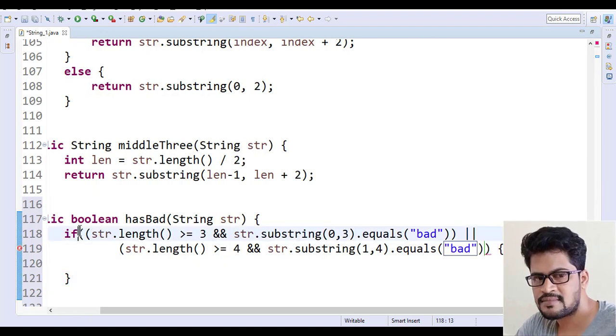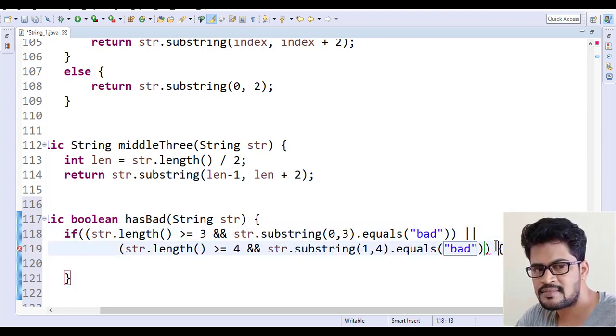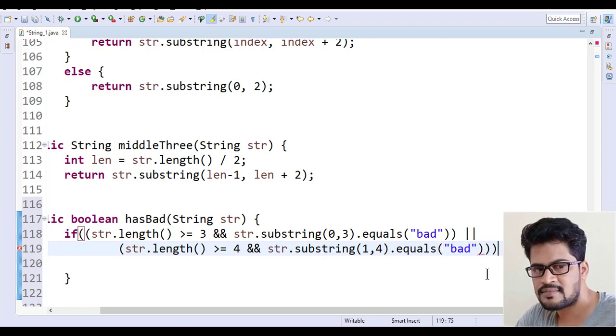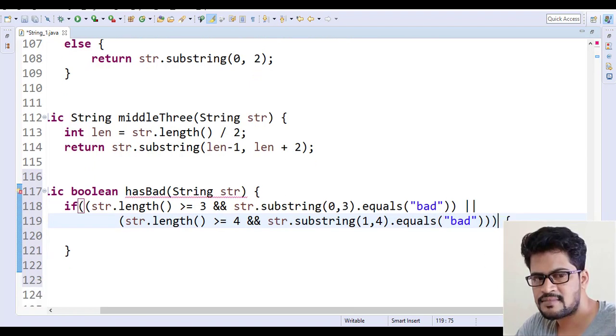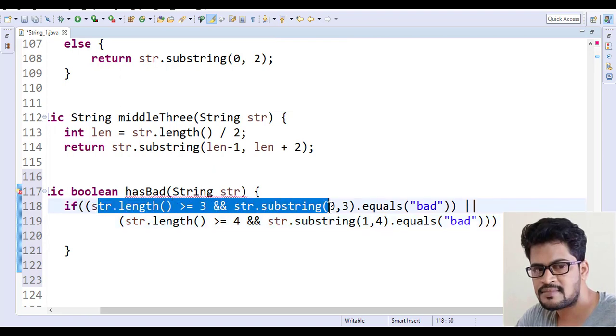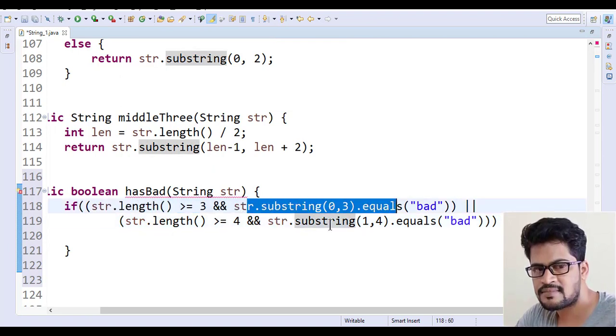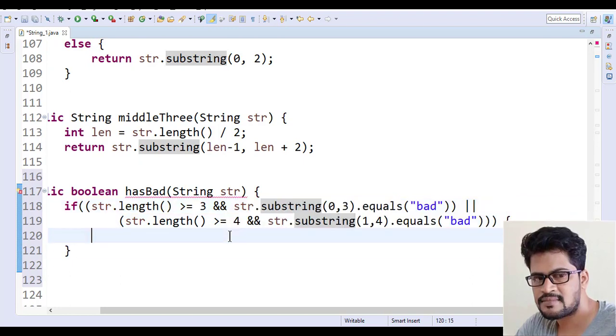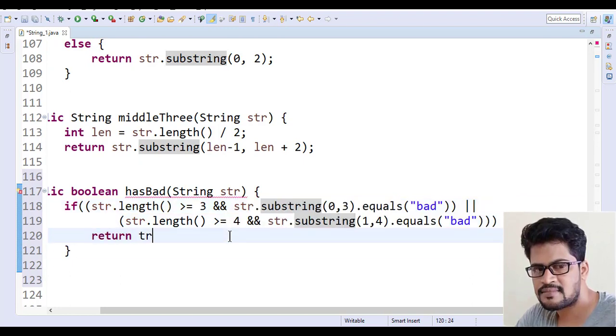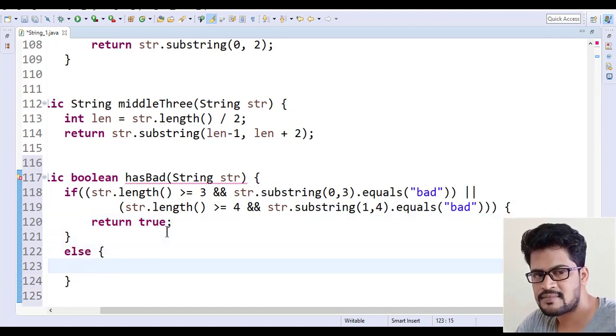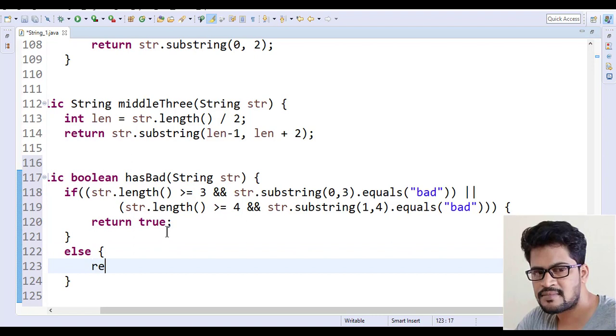dot equals "bad". Something went wrong again. This stopped here, okay, then this is not required. So this is either index zero or index one. If this is the case return true, else in remaining cases return false.